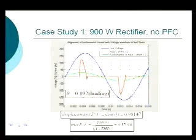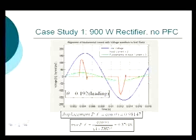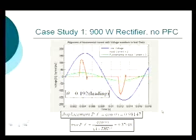Next we need to calculate the displacement power factor. You look at the phase of just the fundamental, because the fundamental is what provides the real work — the harmonics can't produce any real work. We see an angle of about 0.2 radians, and it's leading, as you'd expect with a capacitive load. The displacement power factor alone gives a pretty good power factor of 0.98.